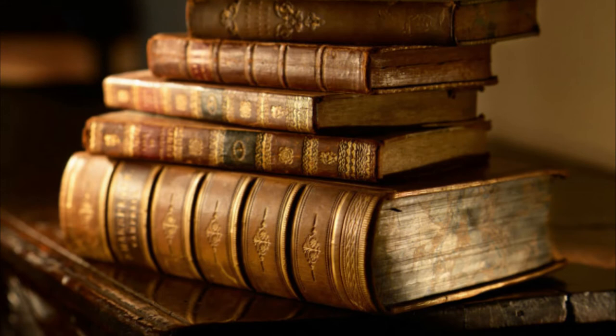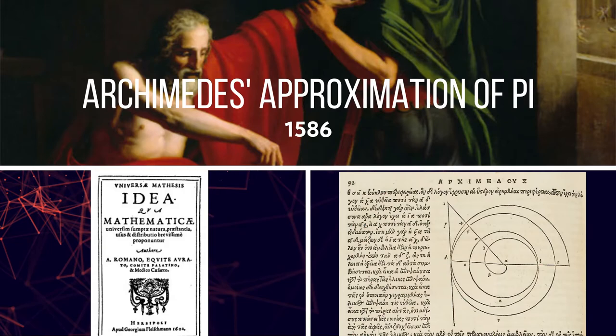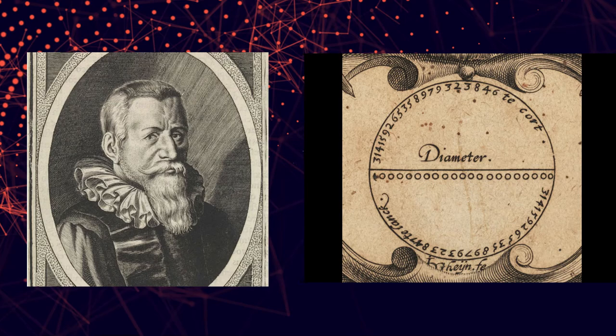Ludolph couldn't read mathematical texts for himself. But in 1586, his friend translated approximations of pi. This must have made a big impression on Ludolph, as he spent the next 25 years of his life improving on the approximation.